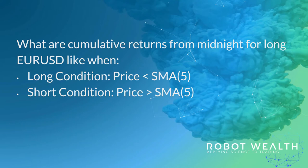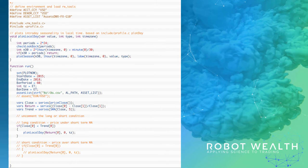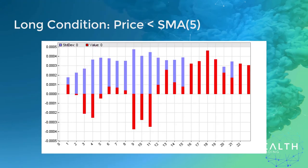We want any effect we see to be robust to any reasonable way of measuring it. A 5-period SMA almost certainly isn't going to be optimal, but if we don't see something on this definition it's going to be hard to get excited. We certainly don't want to torture look-backs and different moving average types and different factors. So here's the code — it's on the site, you can copy and paste it into the Zorro editor and run it. We're going to run it separately for the long trade condition, then comment out the long bit and uncomment the short bit, and run it separately for the short trade condition. Here's the result.